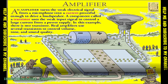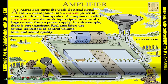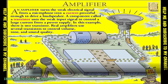When a sound wave pushes the microphone diaphragm in, a weak signal of a few electrons flows into the microphone. This leaves a lot of holes in the base. Now, many electrons from the emitter can flow through the base and into the collector. A strong current flows to the loudspeaker.